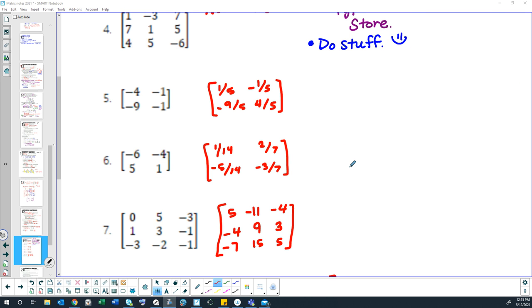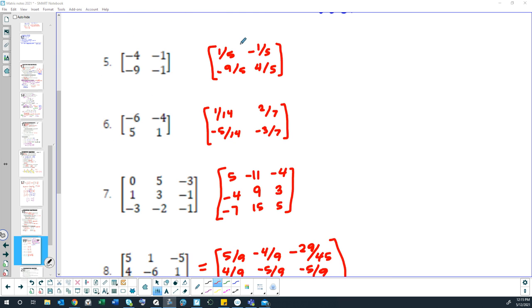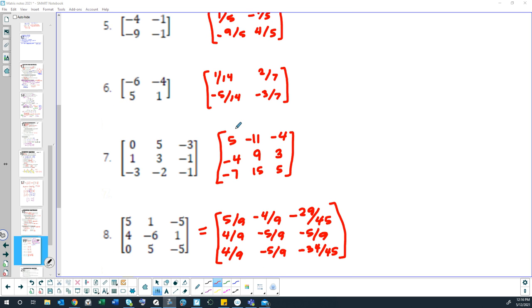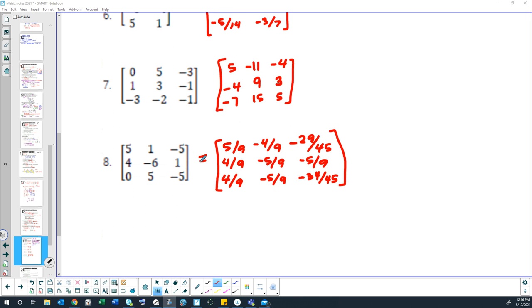Hopefully you had a chance to pause your video and look at these problems and find the answers. So number 5, the inverse is 1/5, negative 1/5, negative 9/5, and positive 4/5. Number 6, the inverse is 1/14, 2/7, negative 5/14, and negative 3/7. For number 7, the inverse is whole numbers, it's weird it doesn't have fractions in it: 5, negative 11, negative 4, negative 4, 9, 3, negative 7, 15, 5. And then number 8, the inverse is 5/9, negative 4/9, negative 29/45, 4/9, negative 5/9, negative 5/9, 4/9, negative 5/9, and negative 34/45.